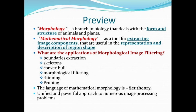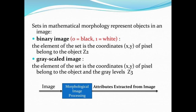The language used here is set theory. Morphology is a powerful approach for various image processing problems. The sets in mathematical morphology represent objects in an image. For a binary image, we have two values: 0 represents black and 1 represents white. The element of the set is the coordinate (x, y) of a pixel belonging to some object in Z². For a grayscale image, there are many intensity levels; each intensity is at some pixel coordinate belonging to the object and its gray level z³.